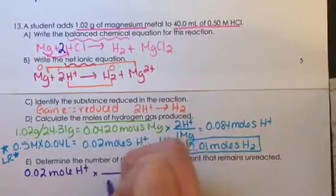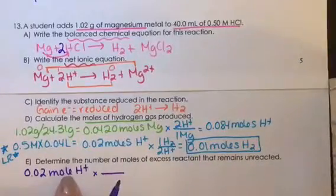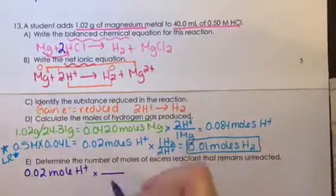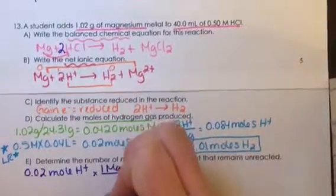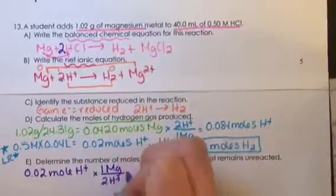And so we want to know how much magnesium is going to be needed to match up with that hydrogen. So we'll use our same mole ratio, but we have one magnesium over two hydrogen ions.